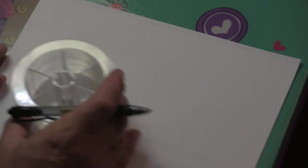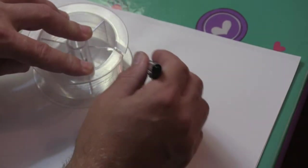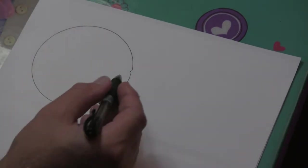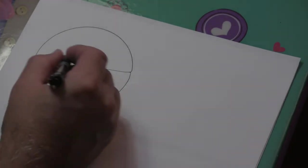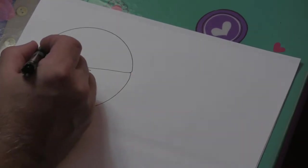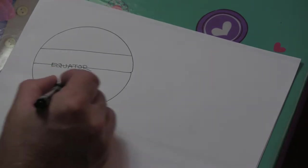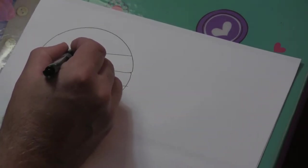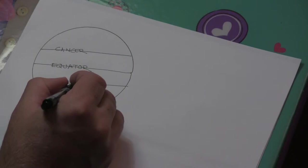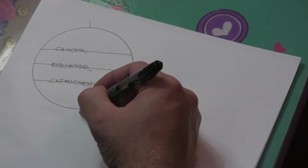So what we're going to explain here is we have a circle. This is the equator, Cancer, Capricorn, North, South.